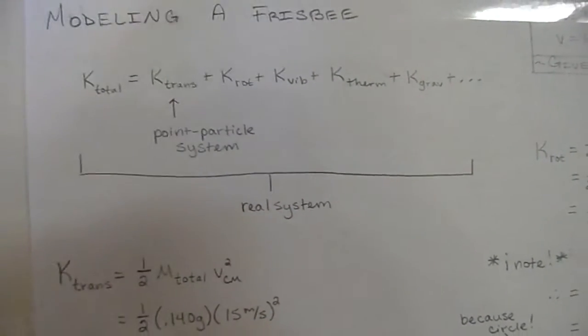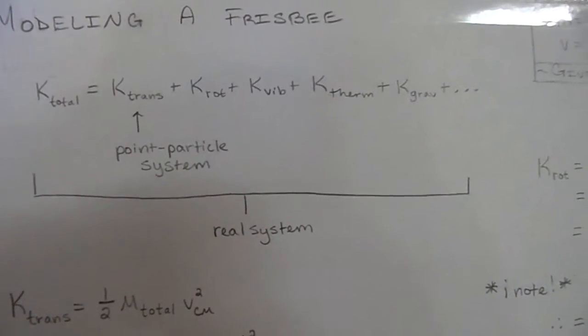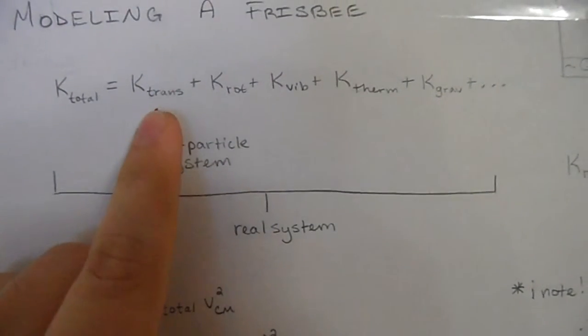However, the real system keeps everything intact and an object in the real system can have anything. It can have translational, it can have rotational, it can have vibrational,